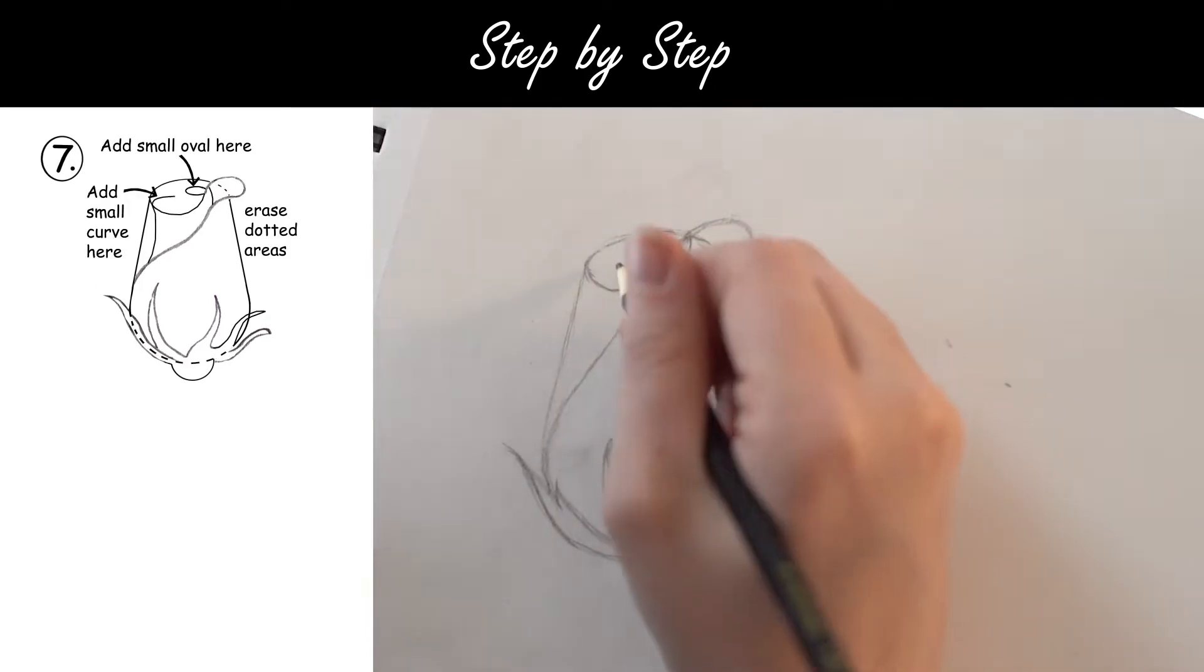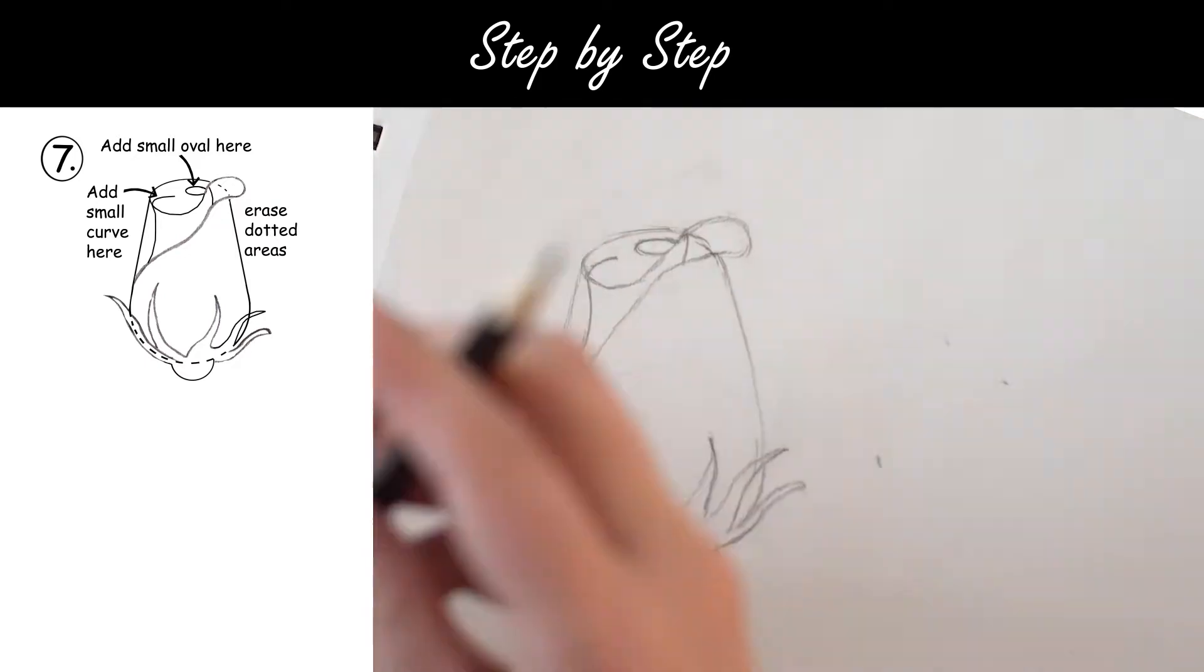Step 7. Add small oval here. Add a small curve here. And erase the dotted areas.